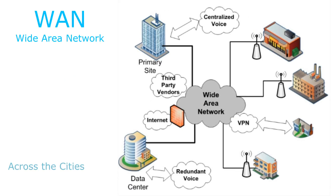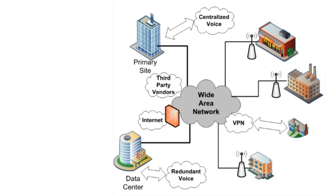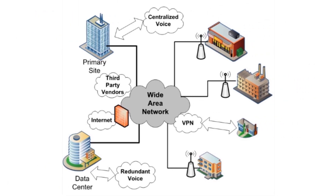A wide area network is a computer network in which the computers connected may be far apart, generally having a radius of more than one kilometer. You can also say that a WAN is a collection of local area networks or other networks that communicate with one another. WANs can be connected together using the internet, leased lines, or satellite links. WANs can facilitate communication and sharing of information and much more between devices from around the world.